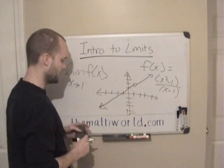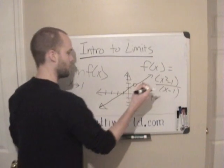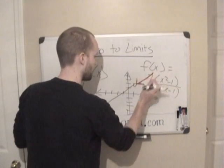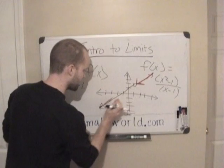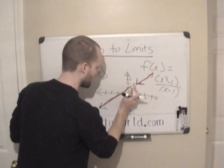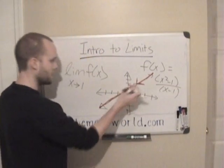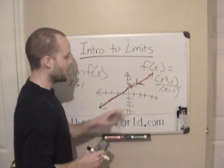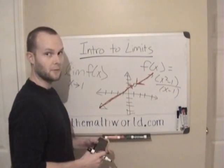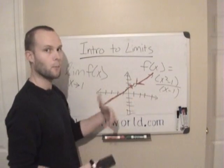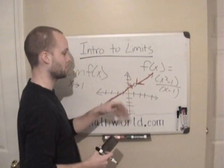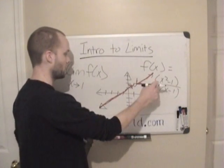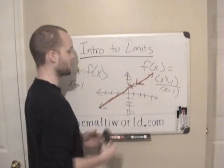But what this is asking is: as x approaches 1 — from both sides of this graph, from everything right of 1 and from everything left of 1 — what number is it getting closer and closer to? One of the ways you can solve this: if the function were defined, we could just plug in the number. But more times than not they're going to give you something that's not defined, so you just can't plug in the number.